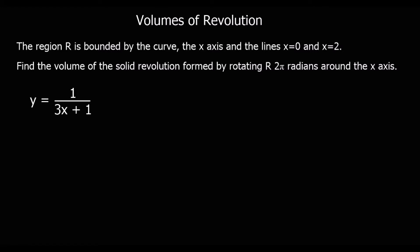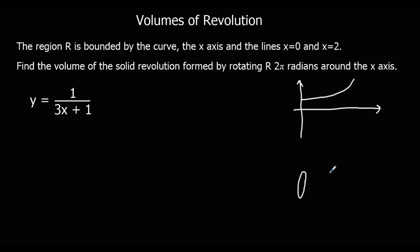This video is about volumes of revolution. If we take part of a curve — in this case part of y equals 1 over 3x plus 1 — and we take the part between 0 and 2, and we rotate it, spinning it around the x-axis for 360 degrees or 2π radians, we generate a 3D shape that looks something like this.